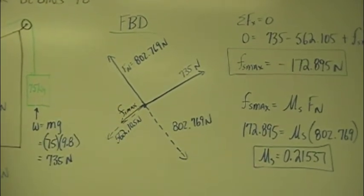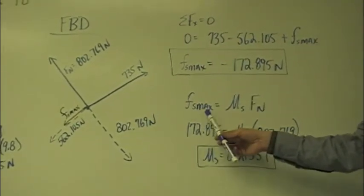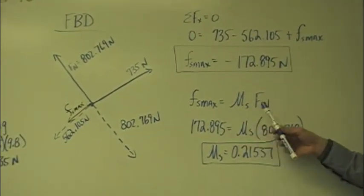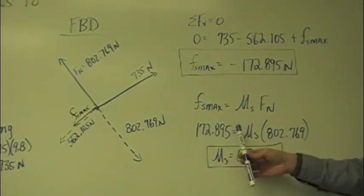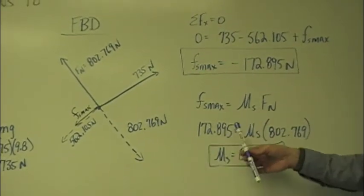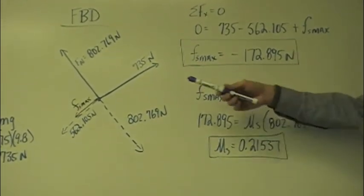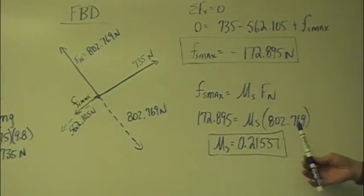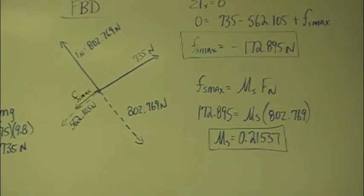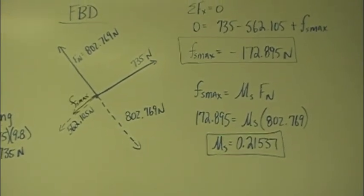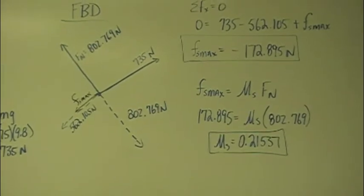Then it's a pretty simple step from there. We just say force of static max equals mu S times Fn. And we plug in the magnitude of our static friction force. We know the normal force, because we've calculated that already. And when we divide that over there, we get a coefficient of static friction of 0.21537.